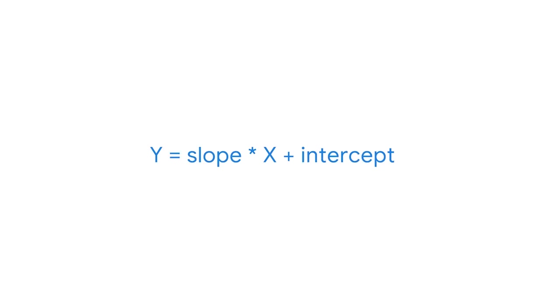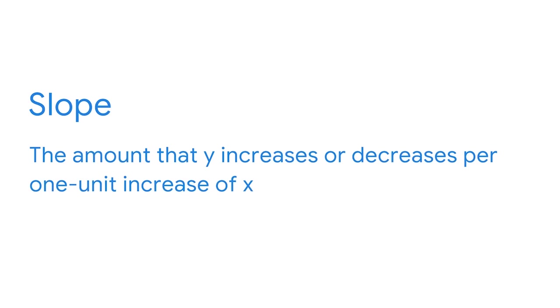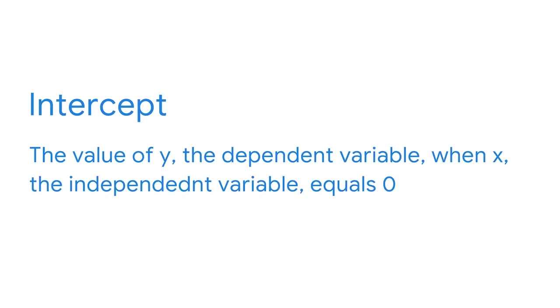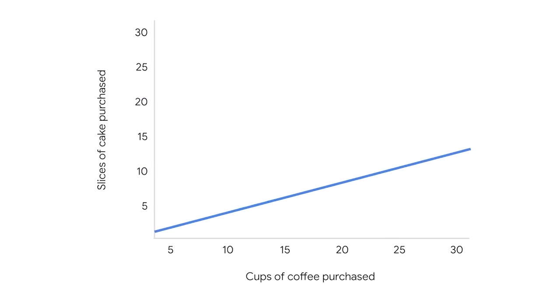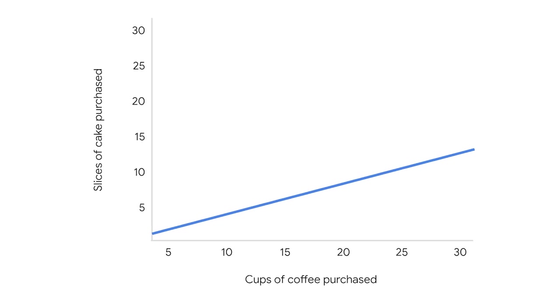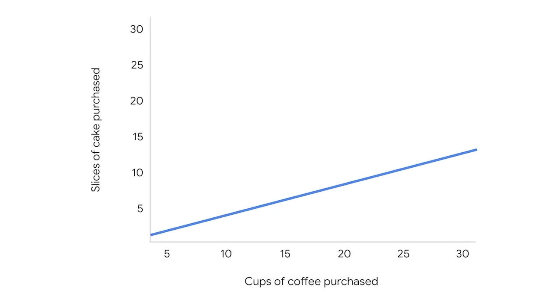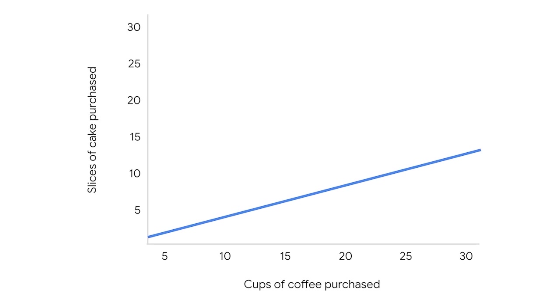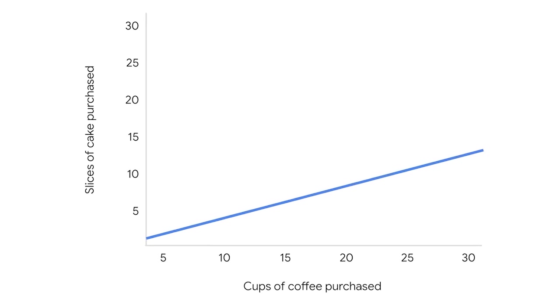An independent, or X variable, could be how many cups of coffee are sold that day. Maybe, as more coffee is purchased, more cake is also purchased. In linear regression, you might encounter two more terms: slope and intercept. The slope refers to the amount we expect Y, the dependent variable, to increase or decrease per one unit increase of X, the independent variable. The intercept is the value of Y when X equals zero. Going back to cake and coffee, the slope would be how many slices of cake are purchased per cup of coffee purchased.